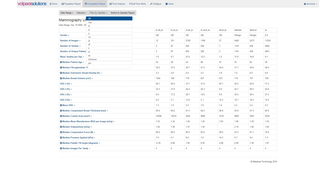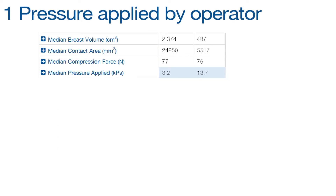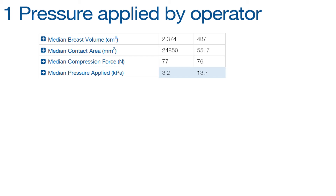Following are examples of how sites have used Volpara Analytics to identify issues and make immediate corrective actions to maintain accurate, high-quality breast care and patient satisfaction. A busy site in the US discovered that one of its operators was routinely applying about 75 newtons force no matter the breast size. As a result, some women were receiving too little compression giving poor image quality and high dose, and others were receiving too much compression giving poor patient experience. We also identified another case where an operator consistently applied too much pressure, which was confirmed with patient complaints.